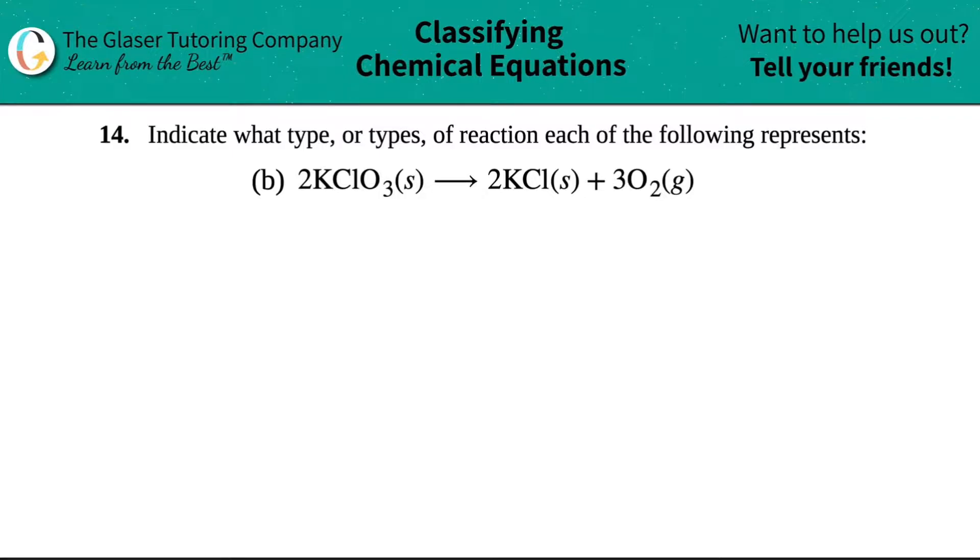Number 14. Indicate what type or types of reaction each of the following represents. And then we have letter B out of the bunch. So in this case, I have 2 KClO₃, which is a solid, will yield or produce 2 KCl solid plus 3 O₂ gas.